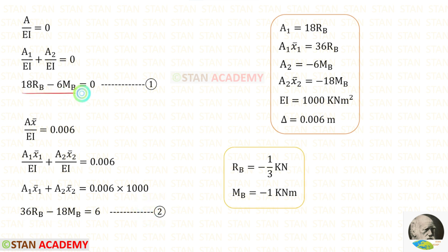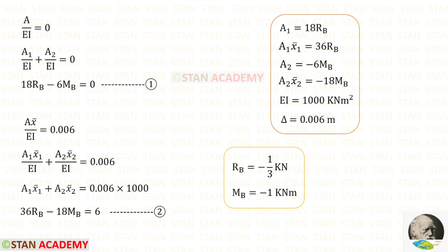Solving equations 1 and 2, we get Rb and Mb. Rb has a negative value, meaning our assumption was incorrect — we assumed Rb acts upward but it actually acts downward. Mb also has a negative value, meaning it acts in the anti-clockwise direction rather than the assumed clockwise direction.